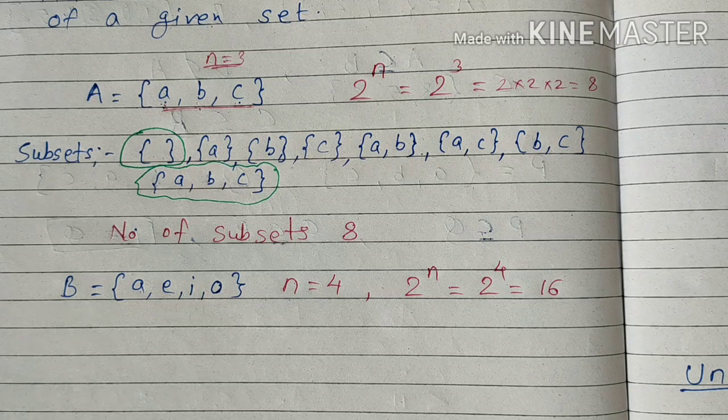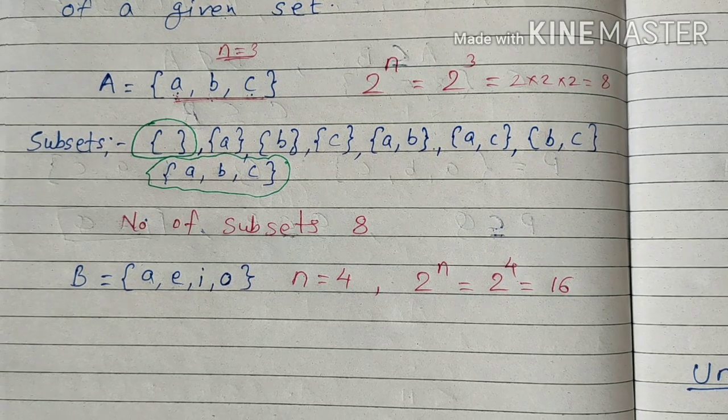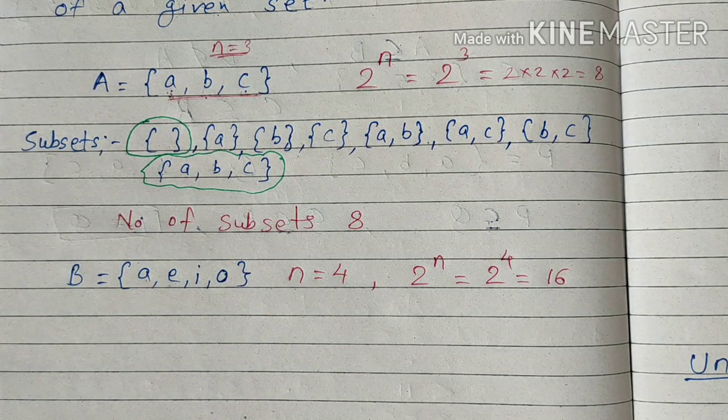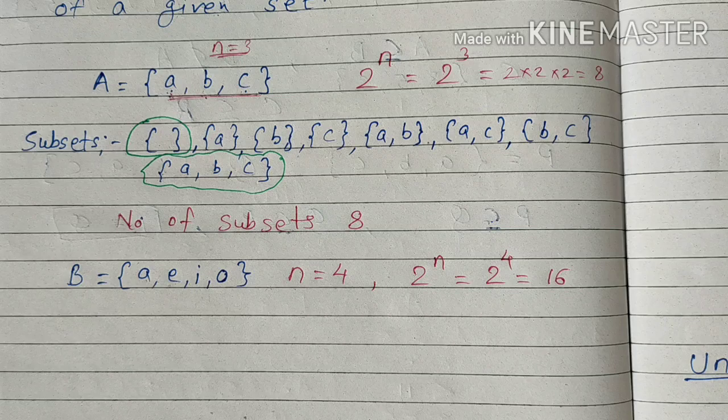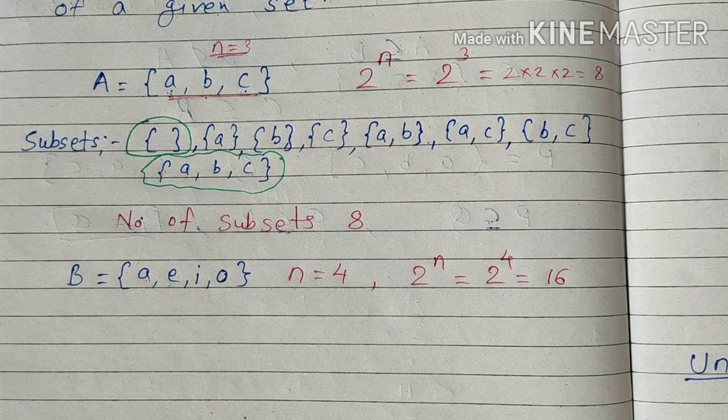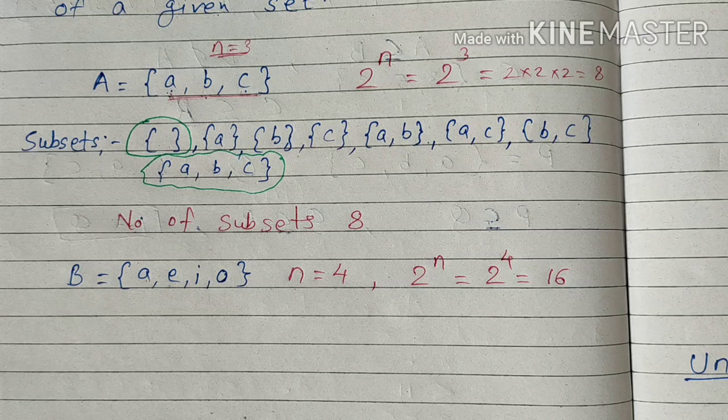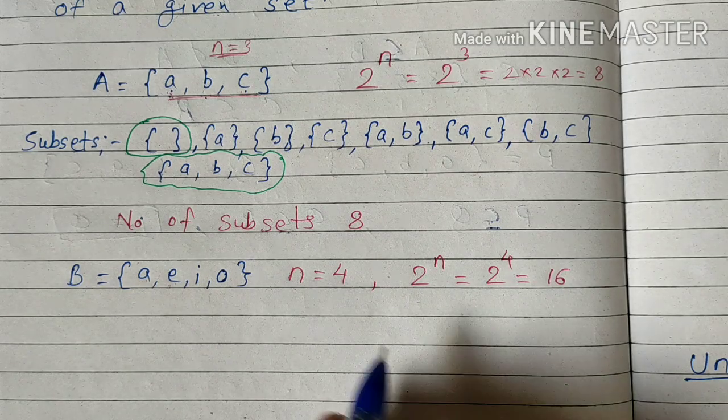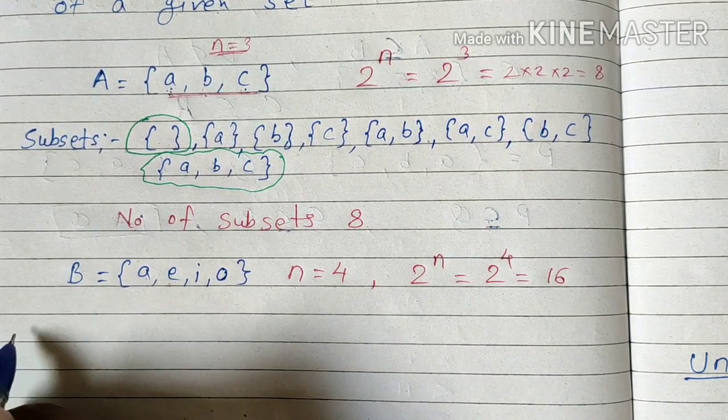That means the B set will contain 16 subsets. Now let us find out which 16 subsets are there. First of all, two sets are confirmed: first is empty set is a subset of any set, and each set is a subset of itself. Remember these two things. These two are subsets of all the sets.